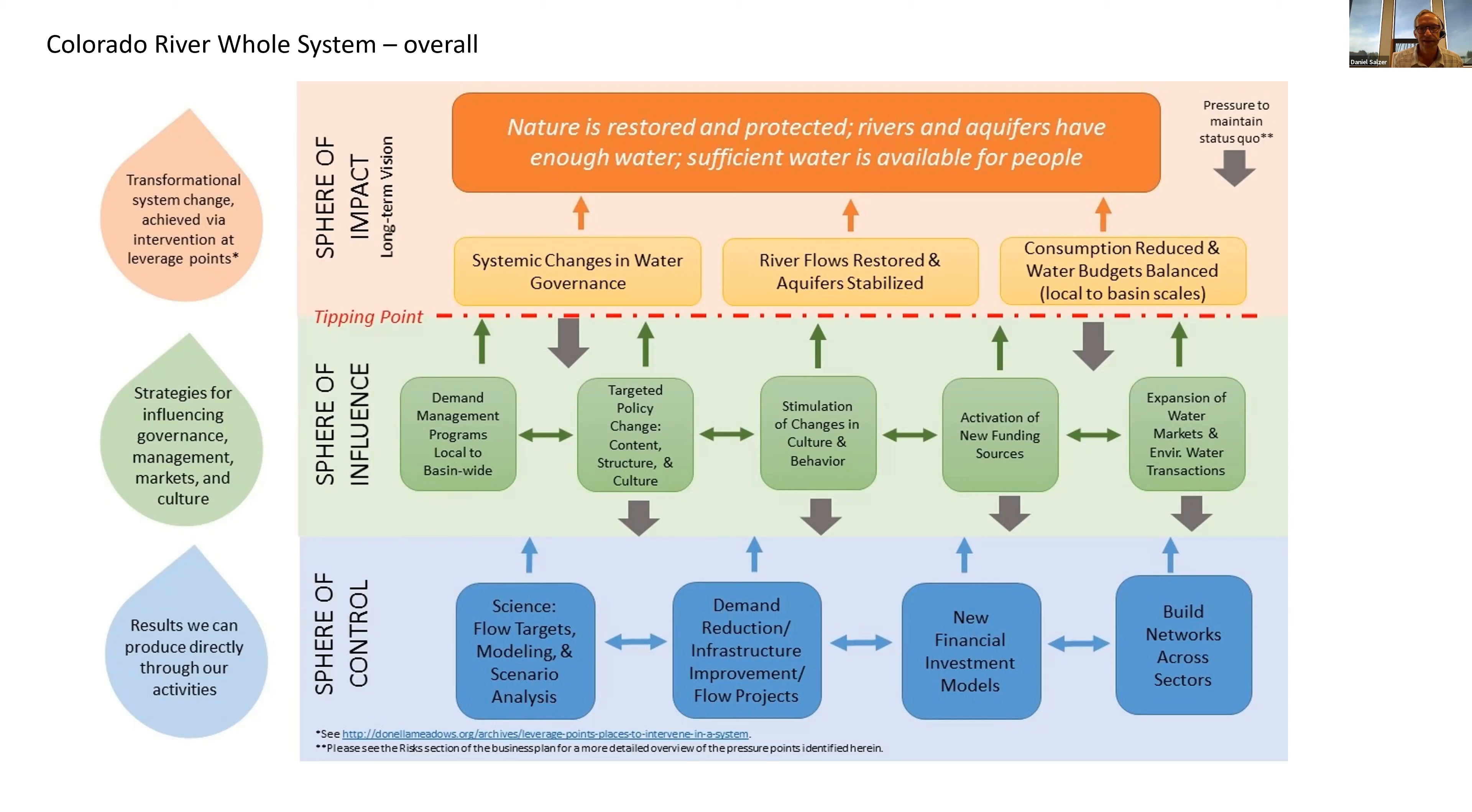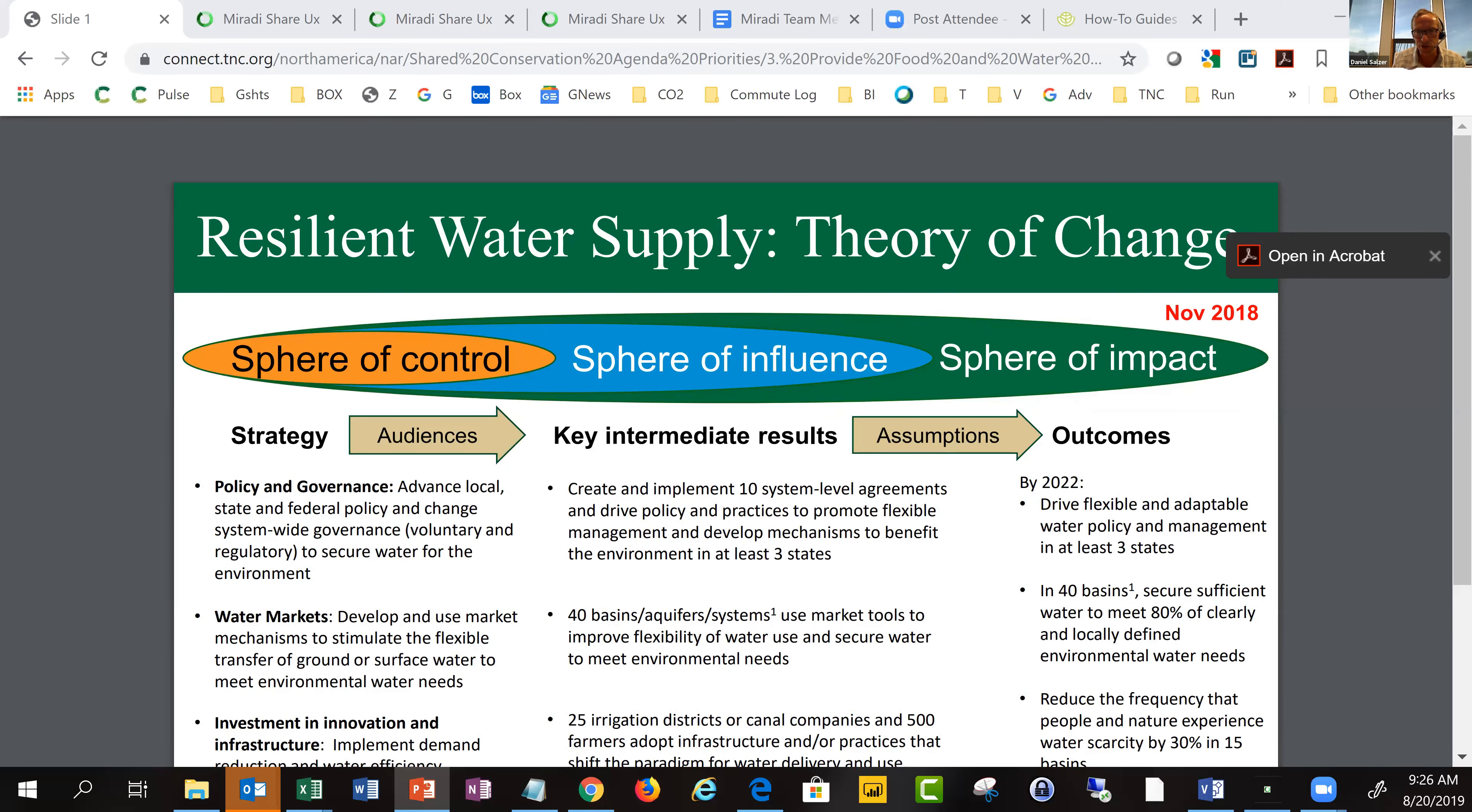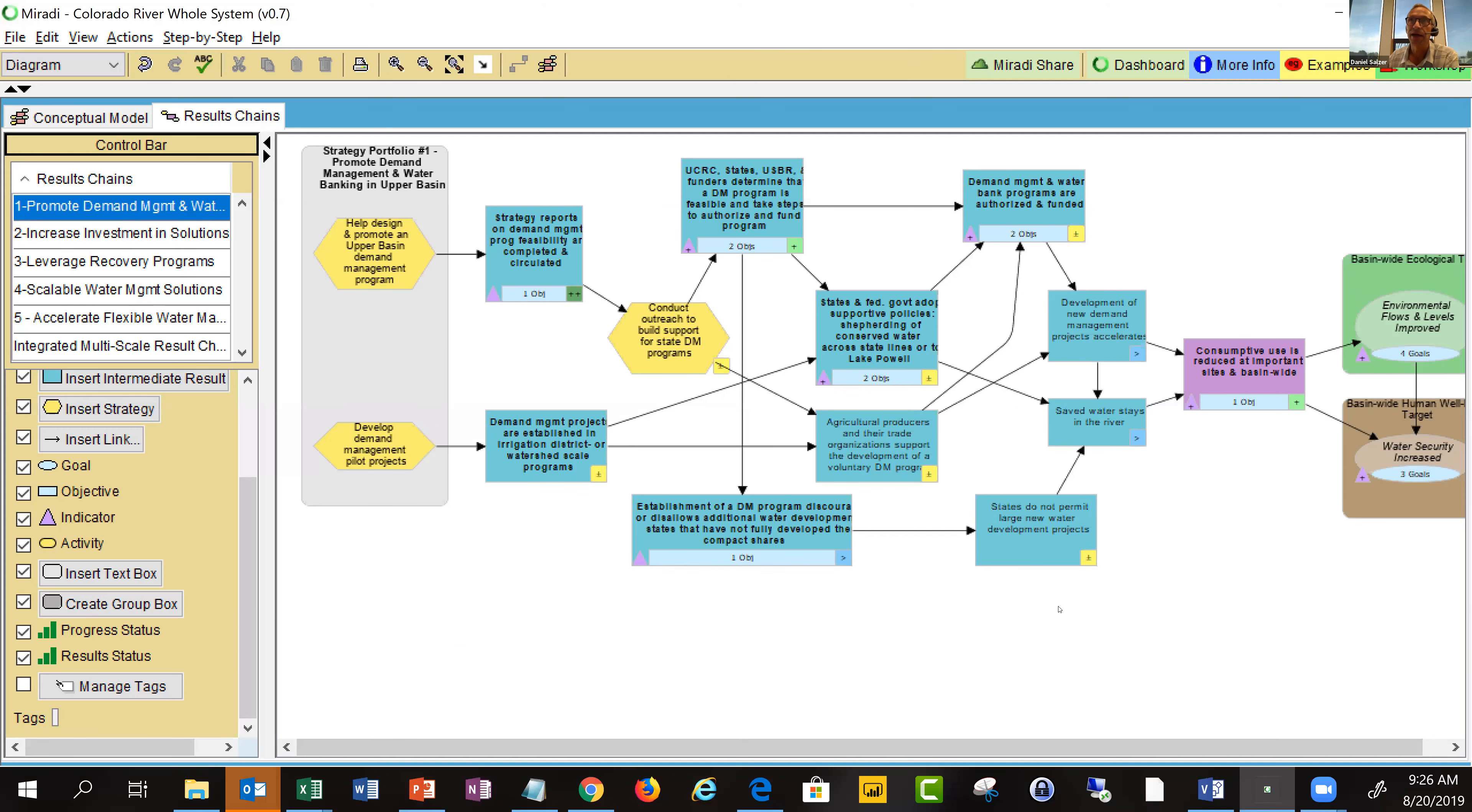They developed a single overall graphic for the theory of change that borrows from those spheres of control, influence, and impact. That is a great way of conveying the major course of action—different strategy portfolios they've come up with for this five state whole system project. They have this as an overarching nice diagram.